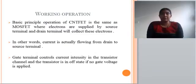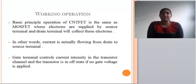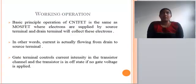The basic operating principle of CNFET is similar to MOSFET. The electrons are supplied to the source terminal, and the drain terminal collects these electrons. In other words, current flows from drain to source. The gate terminal controls current intensity in the transistor channel. When no voltage is applied to the gate, the transistor is in the off state.